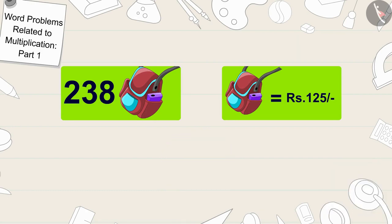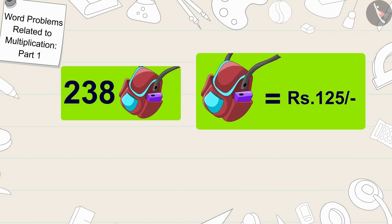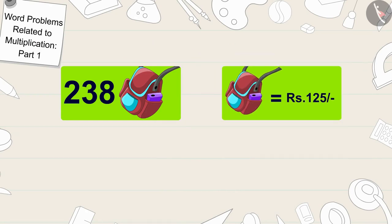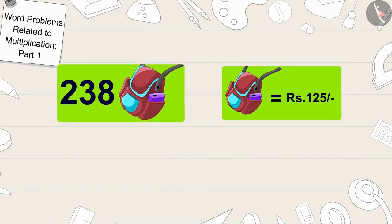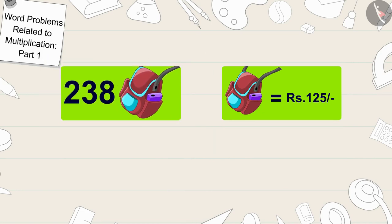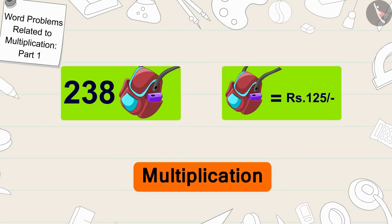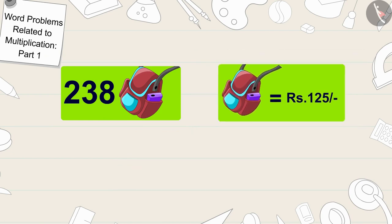Children, whenever we have been given the cost of one item and we have to find the total price of many items, then what process will we use? Exactly, the process of multiplication. The cost of one bag here is 125 rupees.